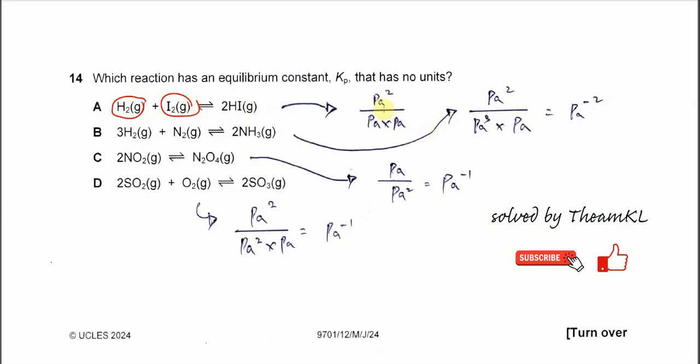Therefore, Pascal squared over Pascal squared cancels out, giving no units. So A is the one that has no unit. If you try the others, you get different units for different reactions.